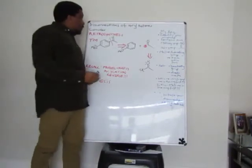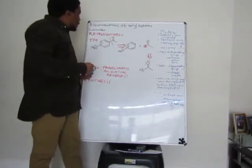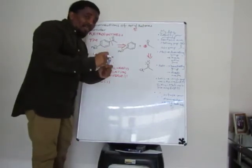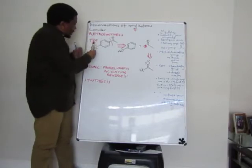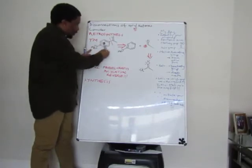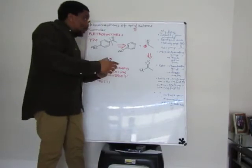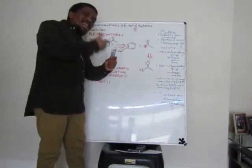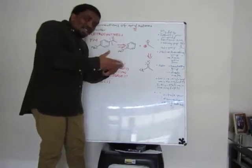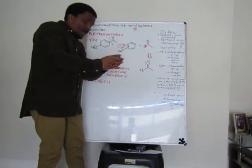Good day, everyone. Today we look at the disconnections of aryl ketones. Aryl means you have a phenyl ring. If this is our target molecule, we consider its retrosynthesis. Whenever you have a target molecule, you need to identify your compound — that is, you look at the functional groups of your target molecule and all its characteristics.